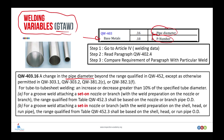As we agreed in our last session, we have to follow three steps in order to know what to do with our joint. The first step is to go to Article Number 4, and the second step is to read paragraph QW-402.16.